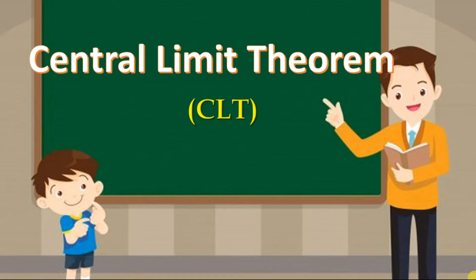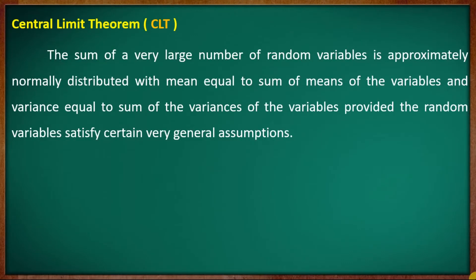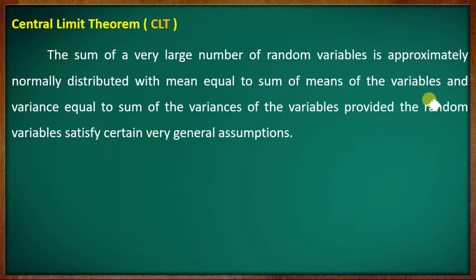In this discussion, I am going on the topic of the Central Limit Theorem. The sum of a very large number of random variables is approximately normally distributed. The mean is equal to the sum of the means of the variables, and the variance is equal to the sum of the variances of the variables, provided the random variables satisfy very general assumptions.